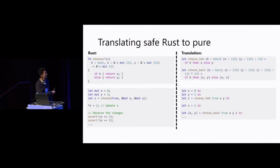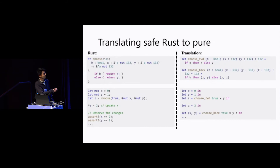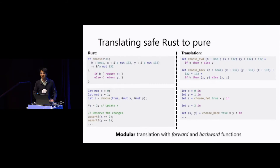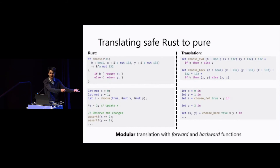When we call the 'choose' function in the translation, we use a 'choose_forward' function — the purified version of choose — and then when we end the lifetime we call a 'choose_backward' function to propagate changes back into the environment. These two functions work a bit like lenses. The whole idea behind the translation is that every Rust function is translated to one forward function and a set of backward functions, one per lifetime, used to propagate changes back.